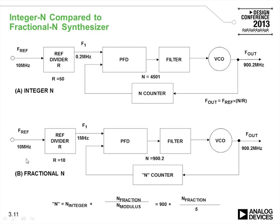With a fractional-N device for the same system, using a 10 MHz reference divided by 10 to give 1 MHz at the PFD, to synthesize 900.2 MHz you use an integer part of 900 and a fractional part of 1/5. Multiplying 1 MHz by 900 + 1/5 gives 900.2 MHz. To move to the next channel at 900.4 MHz, you simply change the fractional from 1/5 to 2/5. The N counter value is now 900.2, compared to 4500 in the integer-N case.